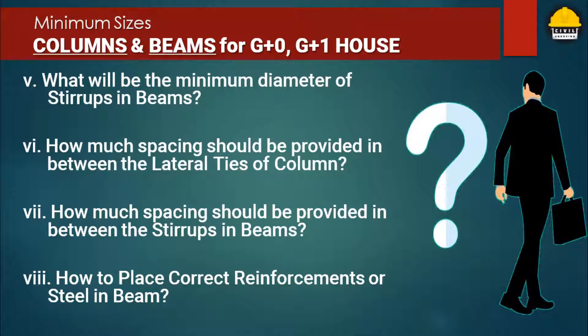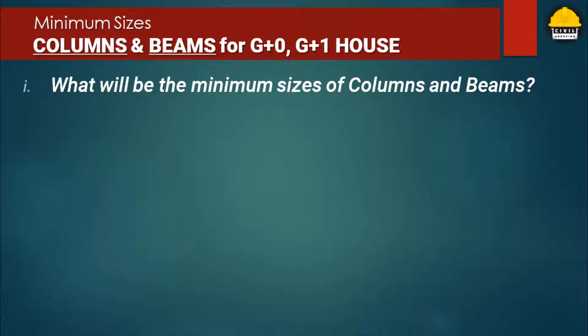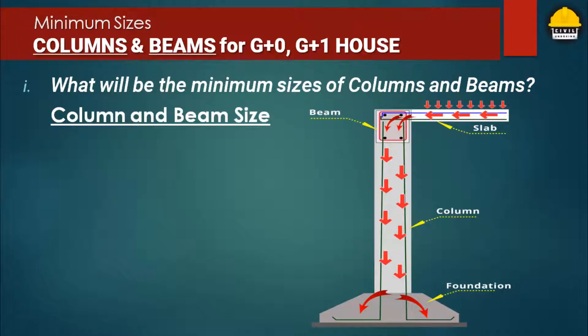Before jumping into the key concepts, we should know the main purpose of these requirements. Beams and columns are two important types of structural elements that play a key role in creating a safe load path to transfer the weight and forces on a structure to the foundations and into the ground. It is therefore very necessary to provide a suitable and reliable size of columns and beams for sustaining the heavy loads of a house or structure.